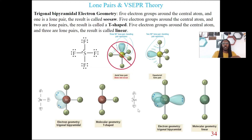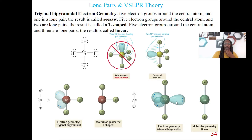And then lastly in this group, let's say we still have five electron groups, with fluorine, fluorine, and three lone pairs all on our xenon. Because we have three lone pairs, that's going to impact the shape. In this case, it's going to be linear — so the molecular geometry is linear.